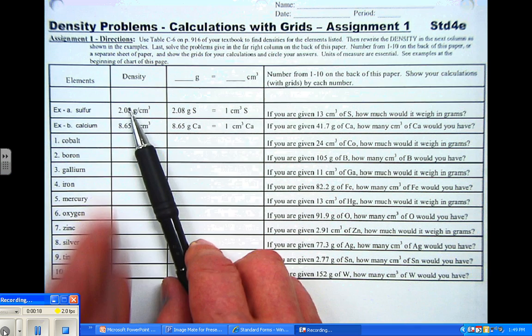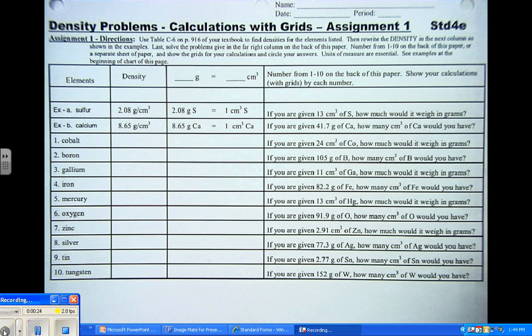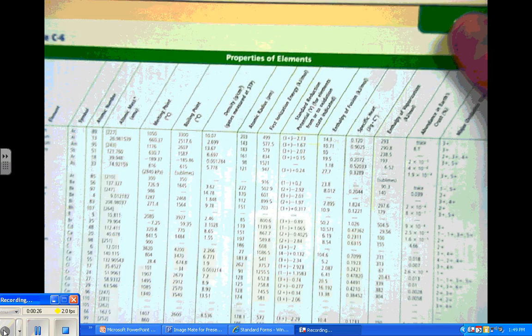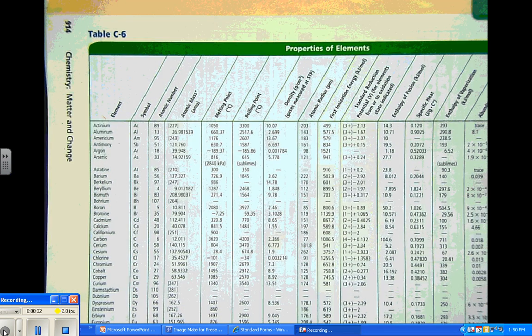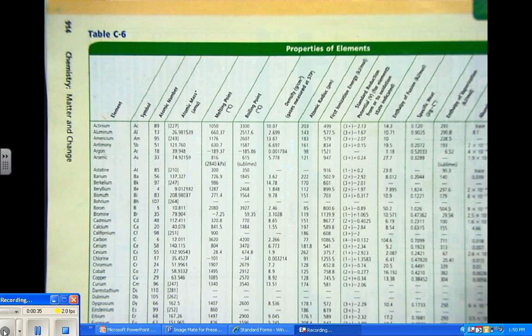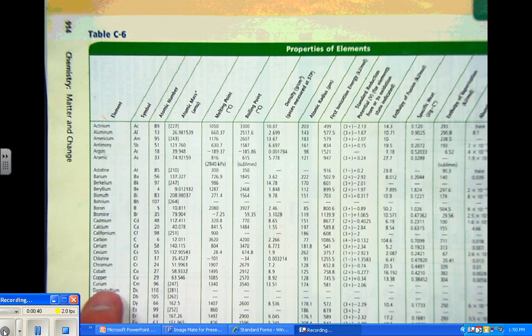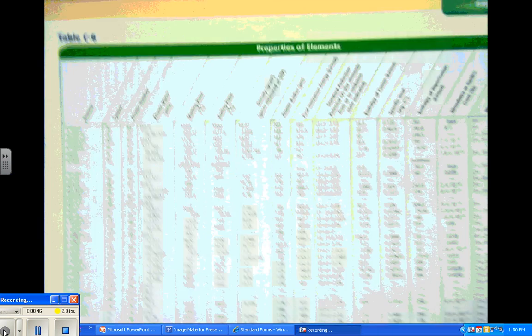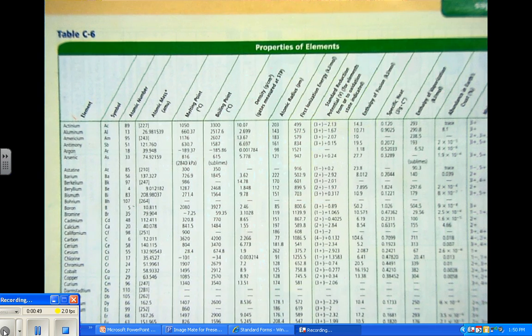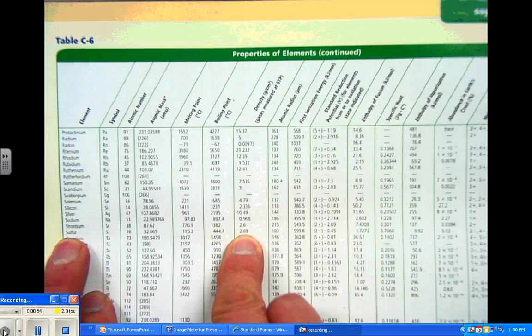In here, I'm giving you in the example problems the density. The density can be found in your textbook on page 914. When we look on page 914, let's get that in better focus. We see a chart that gives us all kinds of things about every element on the periodic chart. We're looking right now for the element sulfur, and if we look at the density, it is 2.08. So that's where that number came from.